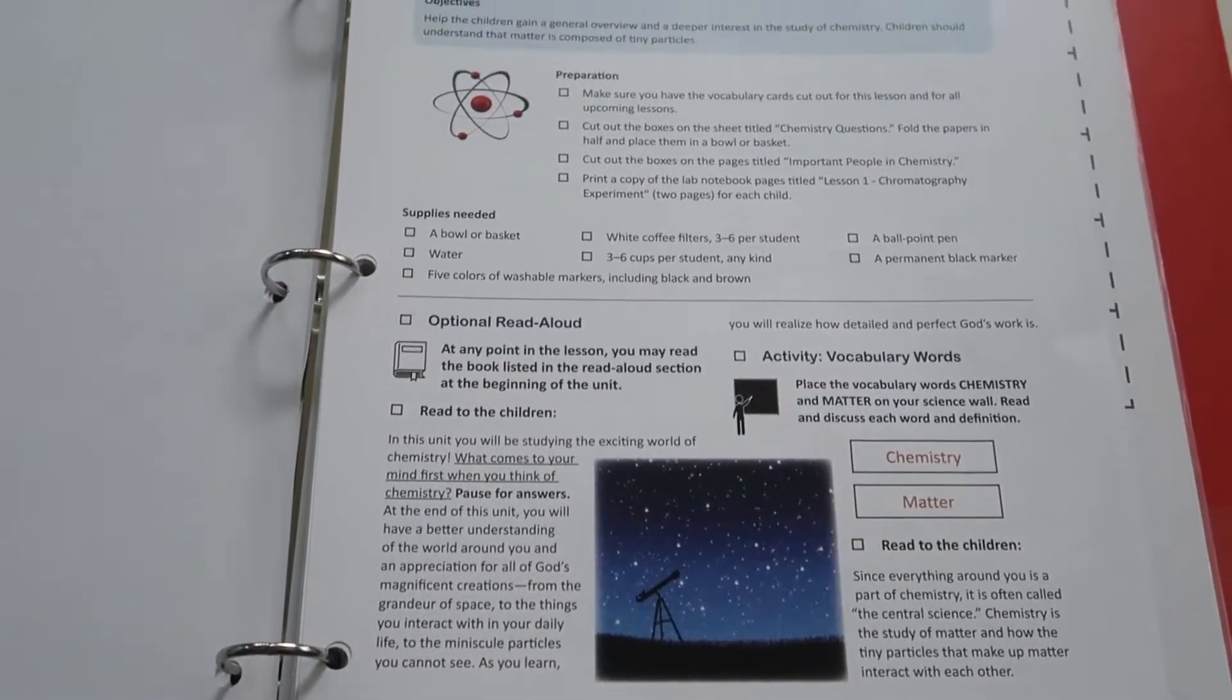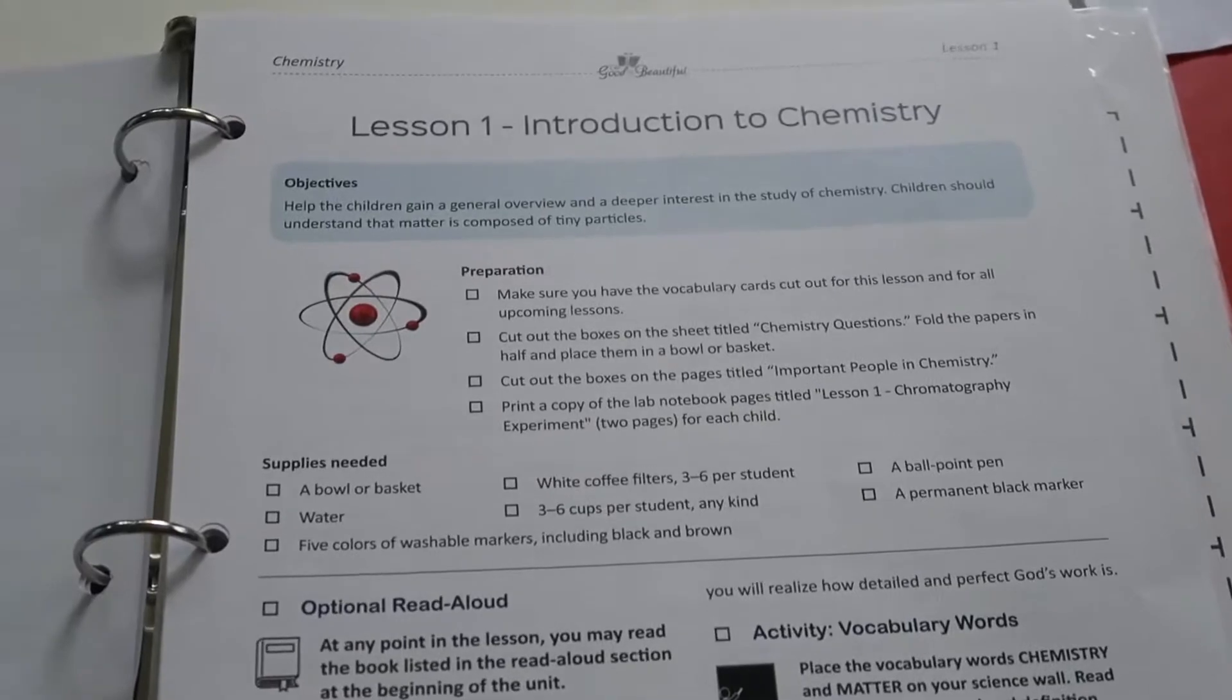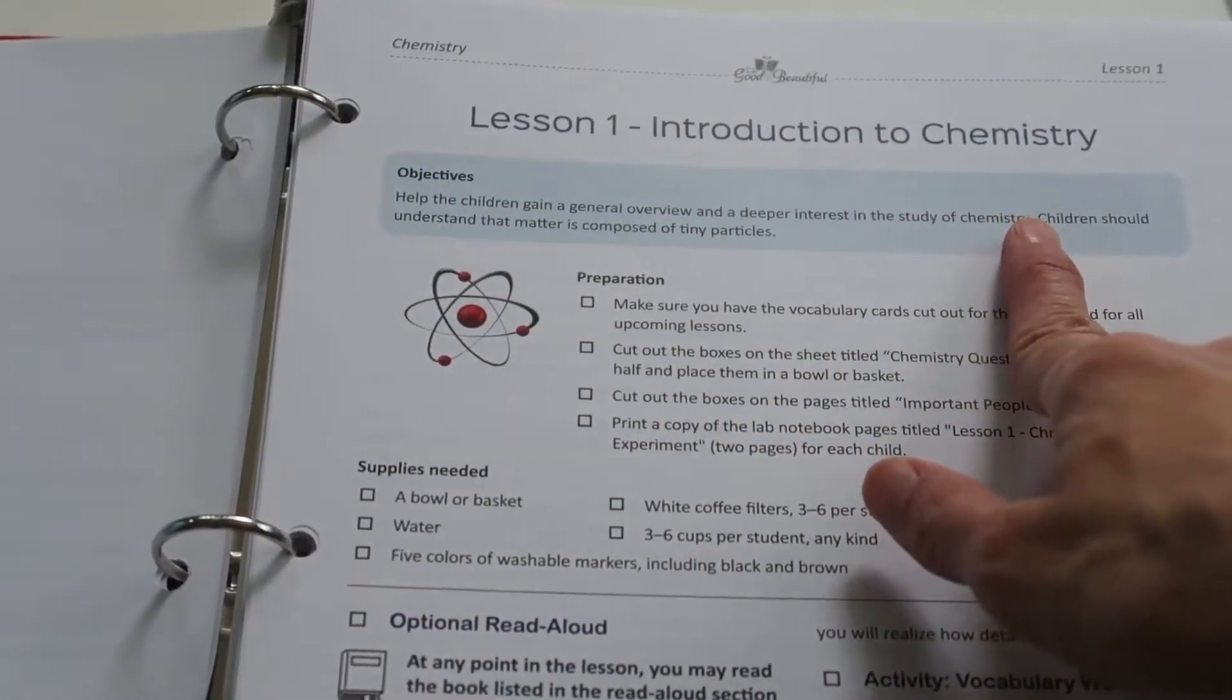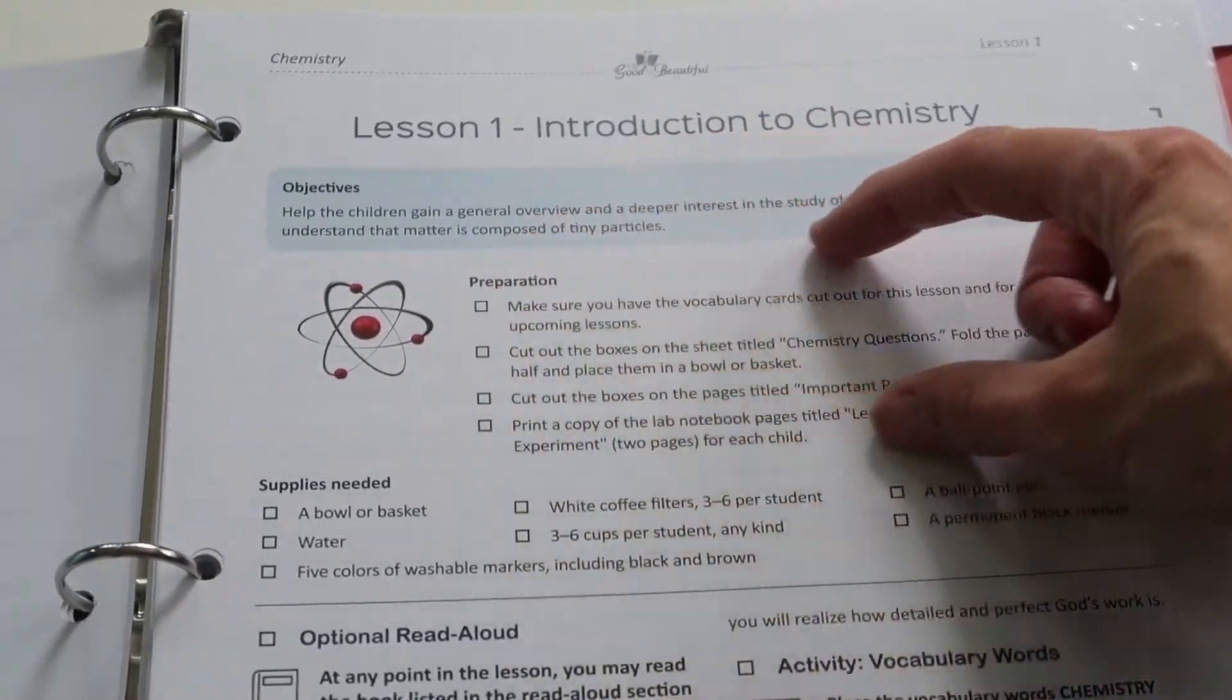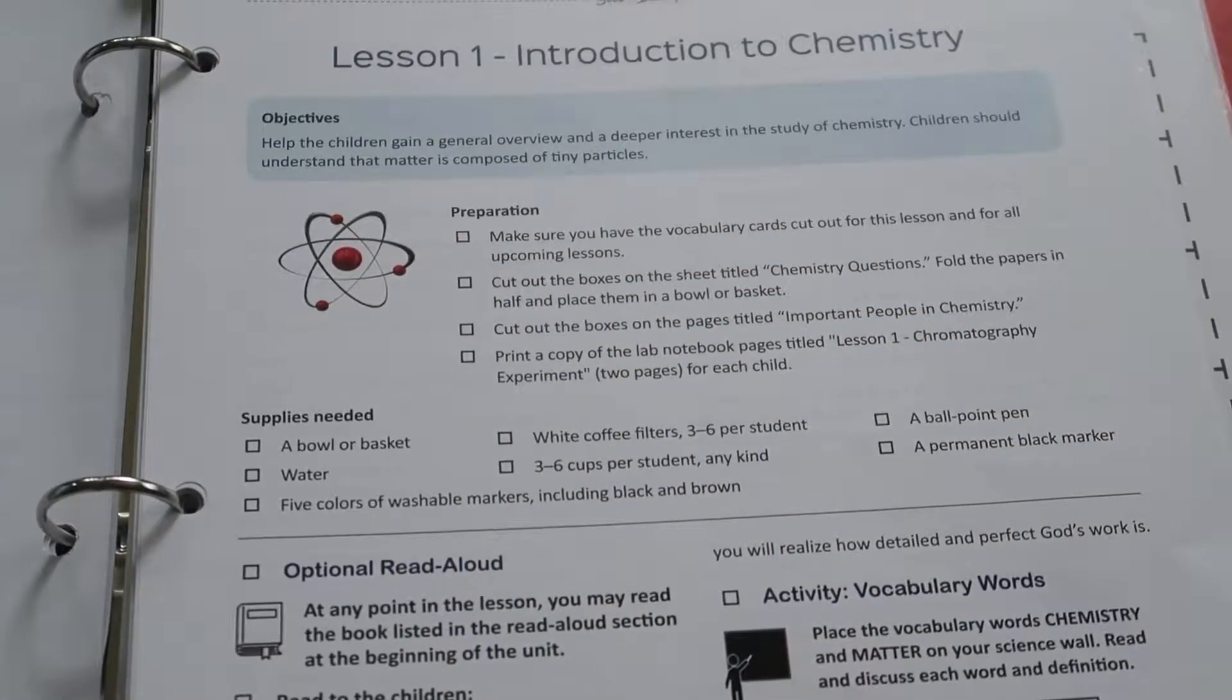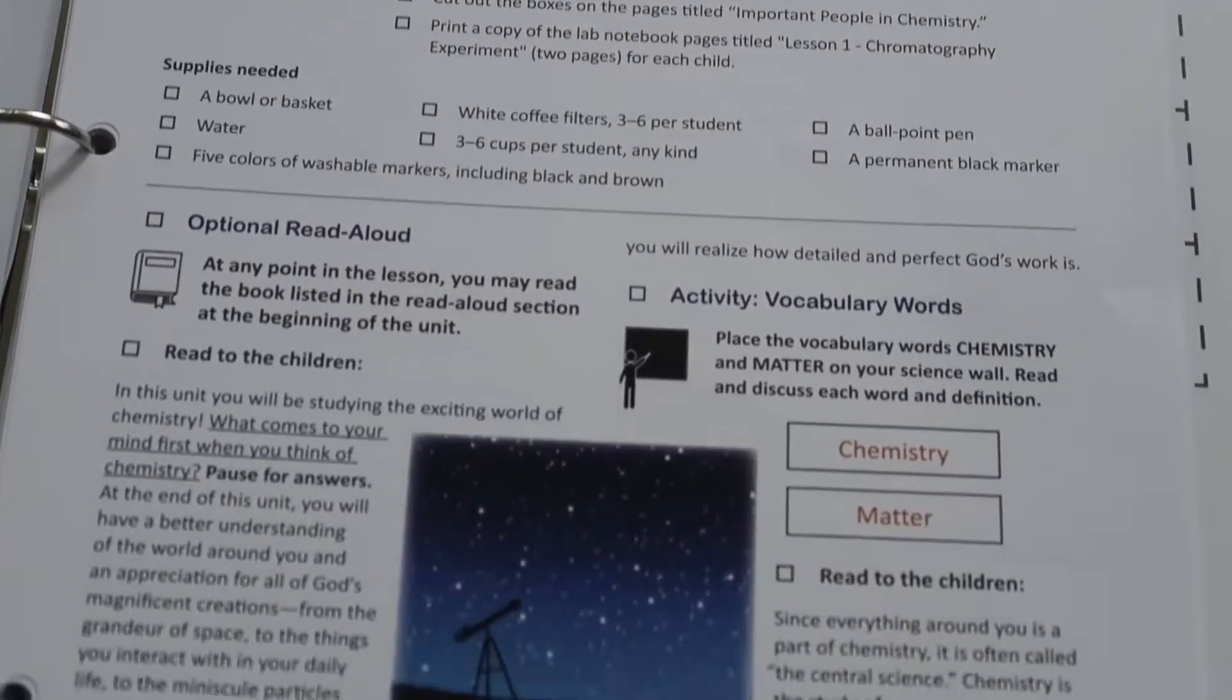Then I'm just going to show you how the lessons are laid out. So here up here for lesson number one, you have an introduction to chemistry. You're always going to have your main objective for the lesson, anything you need to do to prepare for the lesson, any supplies that are needed for the lesson, and you have check marks to check everything off. So if you're a check box person like I am, this is the perfect science for you.